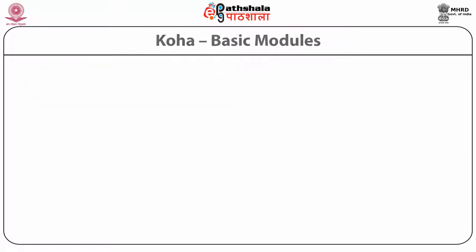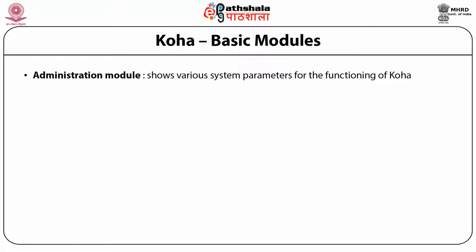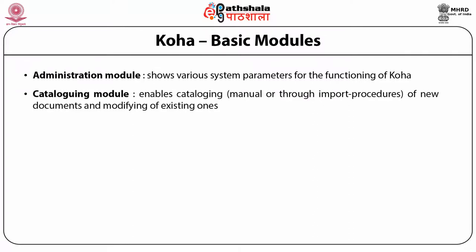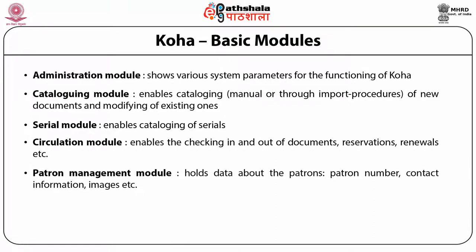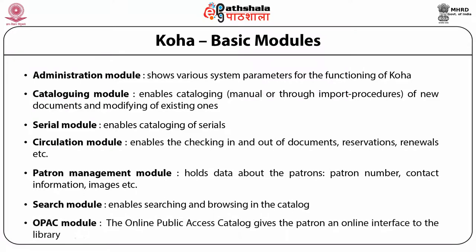The basic modules of Koha include the Administration module showing various system parameters for the functioning of Koha, the Cataloging module enabling cataloging through manual or import procedures for new documents and modifying existing ones, the Serials module enabling cataloging of serials, and the Circulation module for checking in and out of documents, reservations and renewals. Other modules include the Patron Management module holding data about patrons, the Search module enabling searching and browsing in the catalog, and the Online Public Access Catalog giving patrons an online interface to the library.